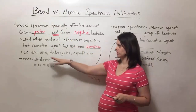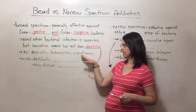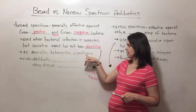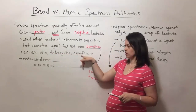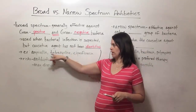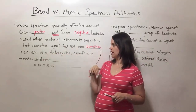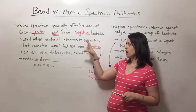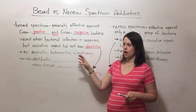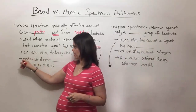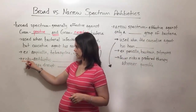Some examples of broad-spectrum antibiotics include ampicillin, tetracycline, and ciprofloxacin — sometimes just called cipro — these are ones you might have heard of. But broad-spectrum antibiotics are not without risks.